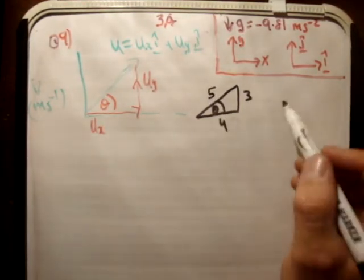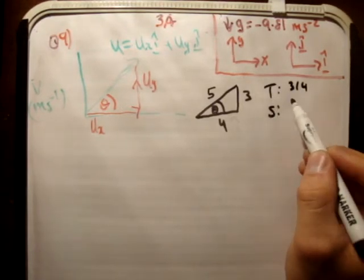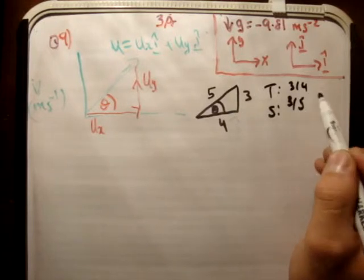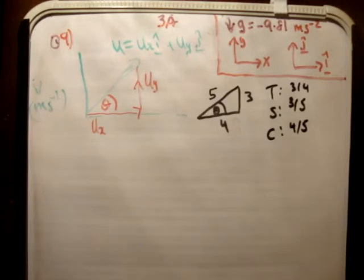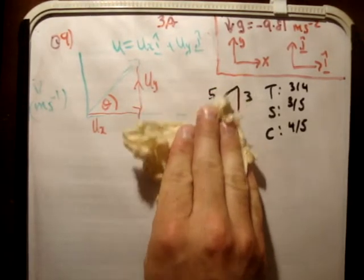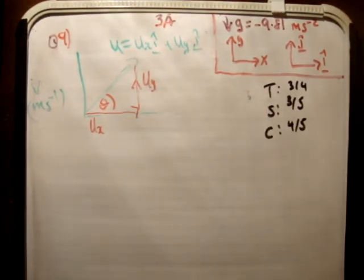So that means that tan is equal to 3 quarters, sine is equal to 3 fifths, and cosine is equal to 4 fifths. How does that help us? Well we know that u is equal to 35.